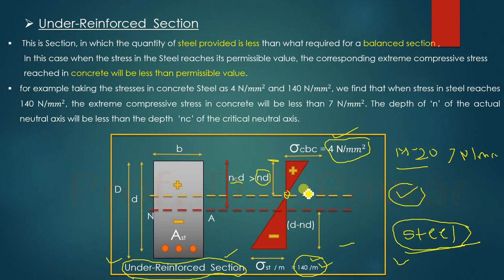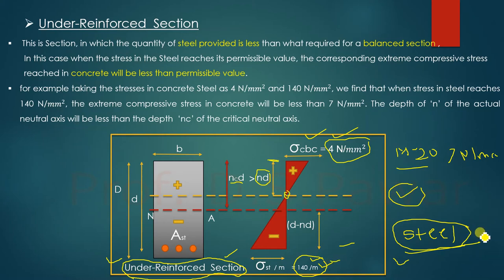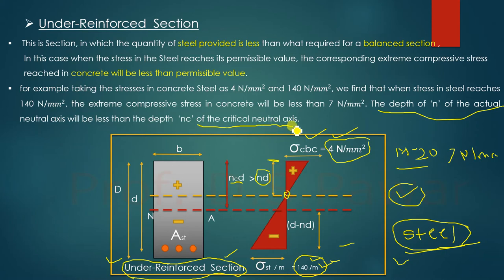In summary for the under-reinforced section: the tensile stresses in steel reach their permissible limit before the concrete does. Concrete does not fail because it does not reach its permissible limit — steel reaches its permissible limit first. The actual neutral axis depth is less than the depth of the critical neutral axis.